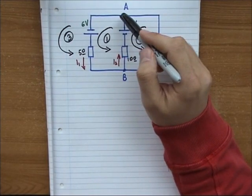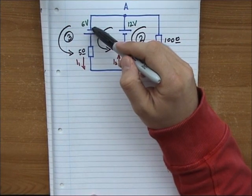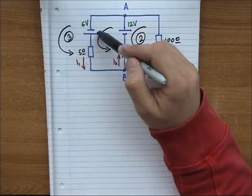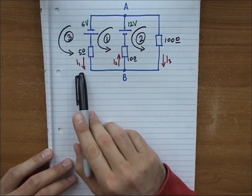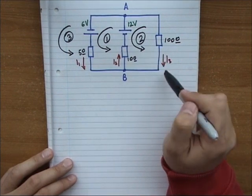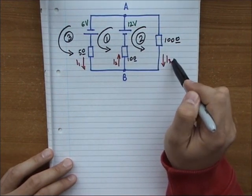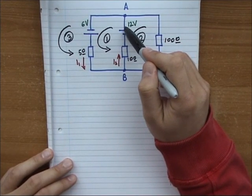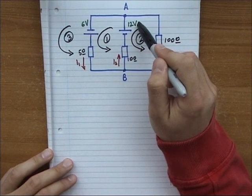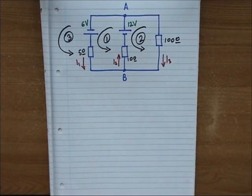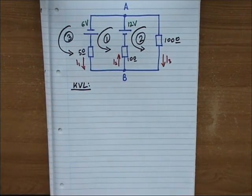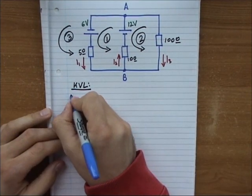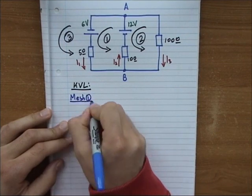The rules we are going to need are: as we move counterclockwise, if I find the negative terminal of the battery I'm going to take it as a positive source. If I'm running along the branch current I'm going to take that current as positive, and if I'm running against it then the current will be negative.